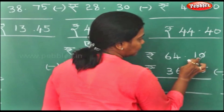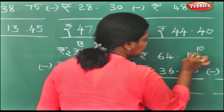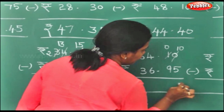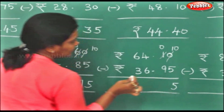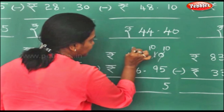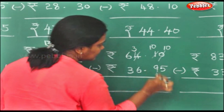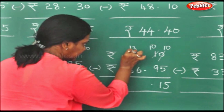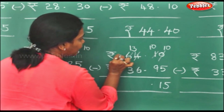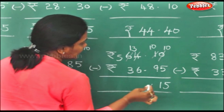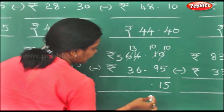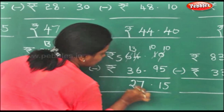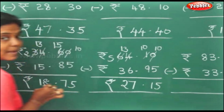Here, you cannot minus it, so this becomes 10, this becomes 0. 10 minus 5 is 5. This again becomes 10, and this becomes 3. 10 minus 9 is 1. 3 you cannot take off from 6, so this becomes 13 and this becomes 5. 13 minus 6 is 7. 5 minus 3 is 2. So this is rupees 27 and 15 paise.